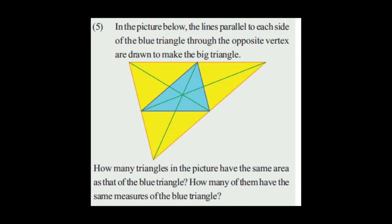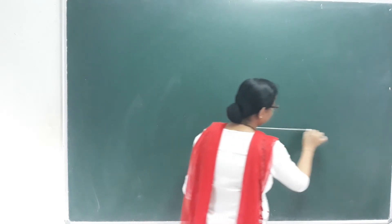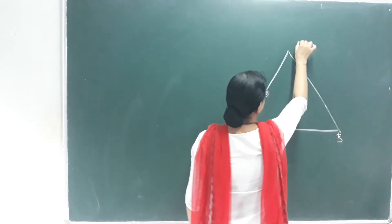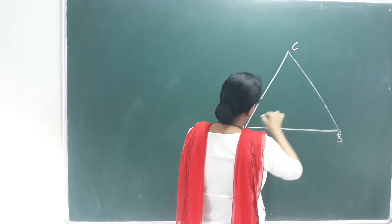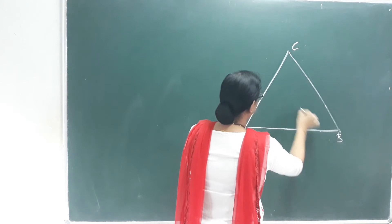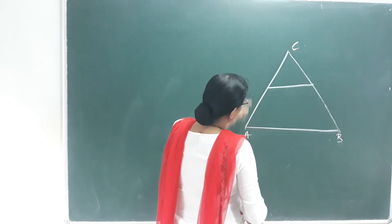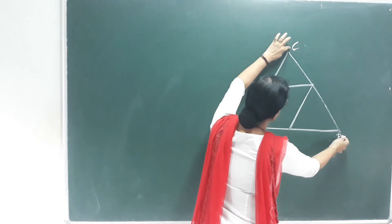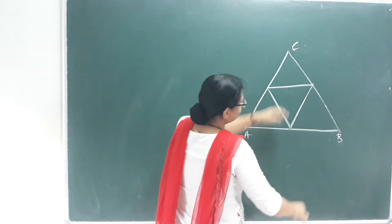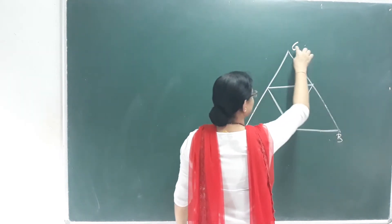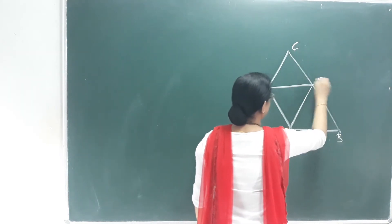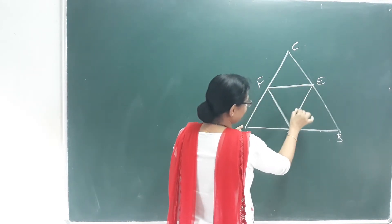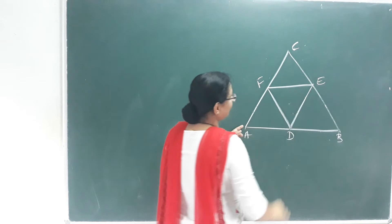How many of them have the same measures as the blue triangle? A, B, C. I go parallel here through each vertex. Then I use the BC parallel line here. So in triangle ABC, I label the outer triangle D, E, F. Now we have seen that triangle DEF has the same area. How many triangles can we see here?